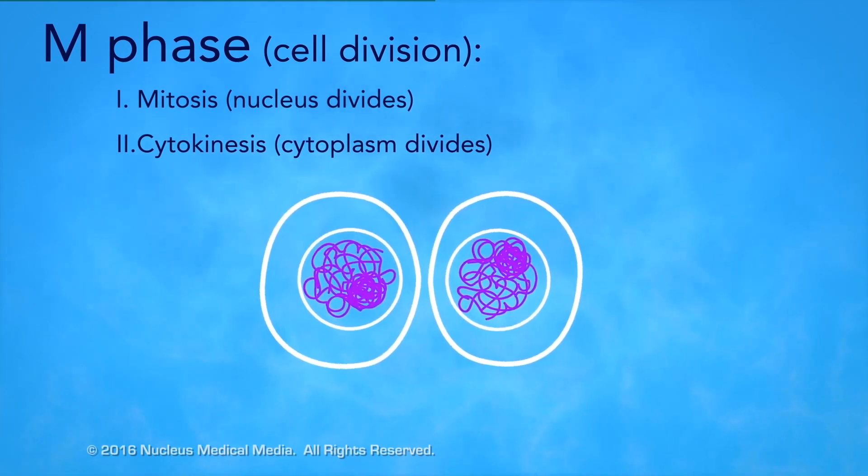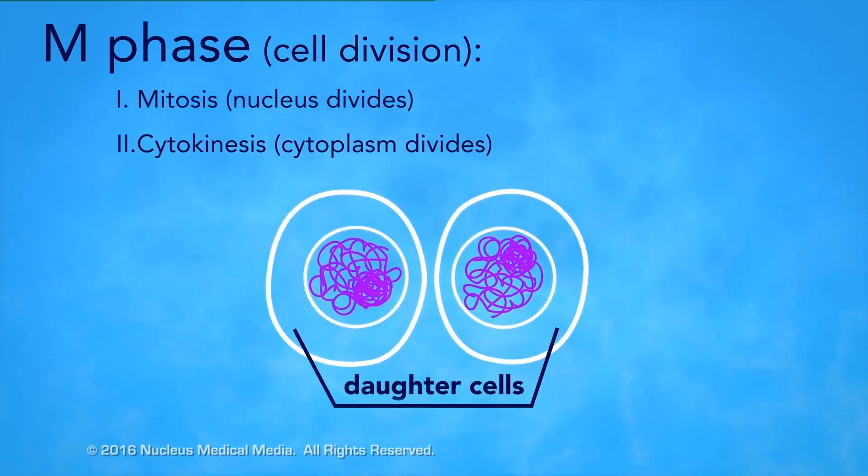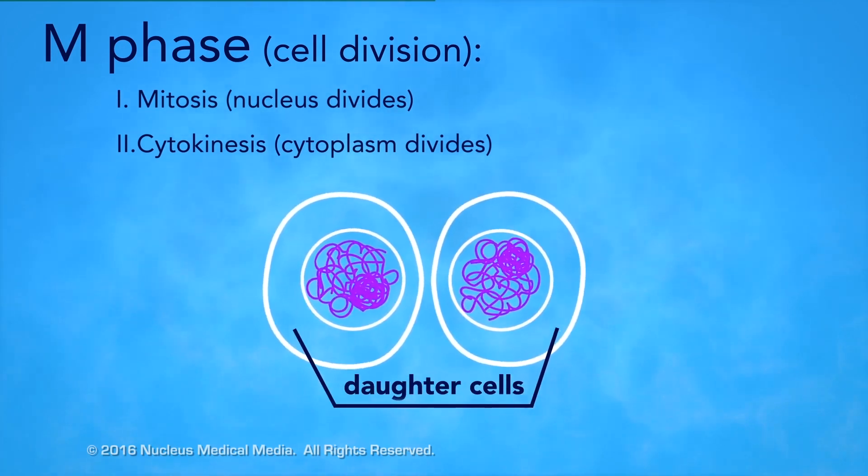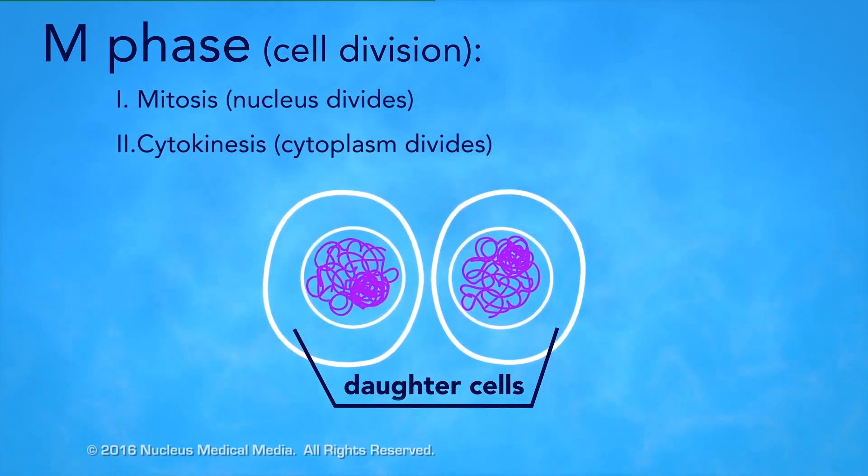The M phase is complete after cytokinesis occurs. The M phase of the cell cycle always results in two daughter cells. Both of these daughter cells are identical to each other, and identical to the original cell that underwent mitosis.